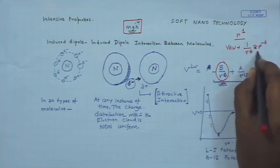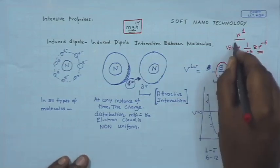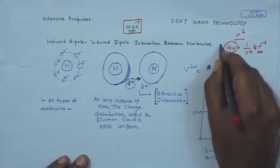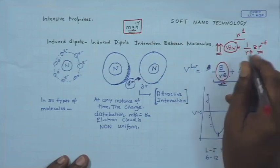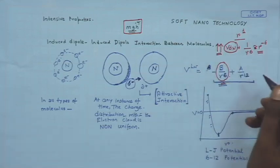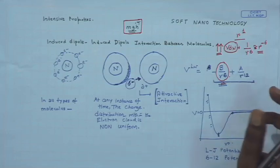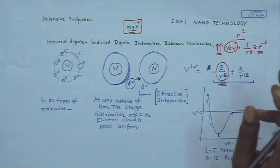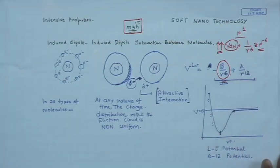Now you can understand that if r is smaller, this term starts to shoot up. It turns out that at a few tens of nanometer length scale, gravity is almost non-existent and the situation is completely dominated by van der Waals force.